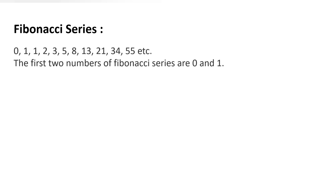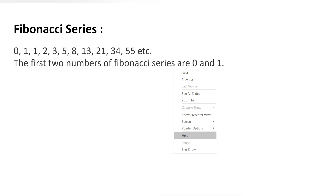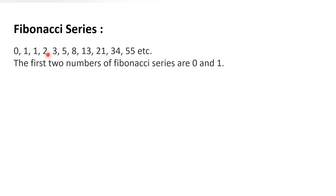So what is this Fibonacci series? It is a mathematical series in which the third term is generated by adding the previous two terms. The first two numbers of the series are 0 and 1 — these are the fixed numbers from which the series will start. So when the third number is generated, it is generated by adding the previous two terms: 0 plus 1 will be 1. For the next term, the previous two terms are 1 and 1, so 1 plus 1 will be 2. Then the previous two terms are 1 and 2, so 1 plus 2 will be 3, and so on. In this way the series is generated by continuously adding the previous two terms.